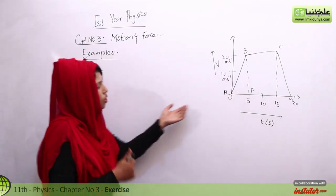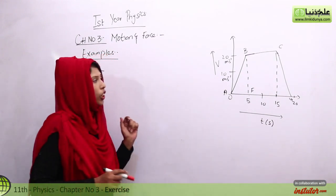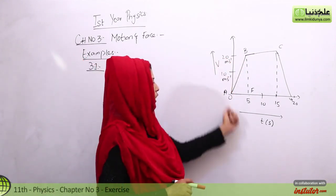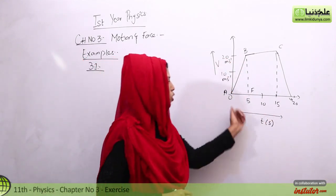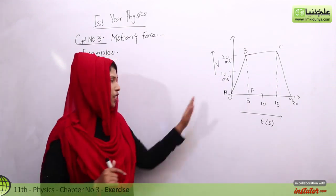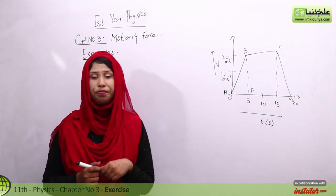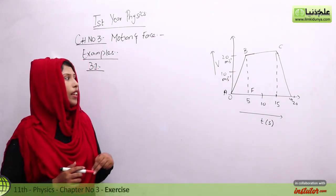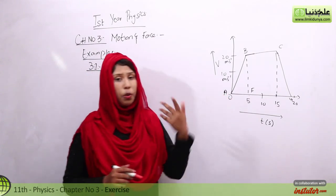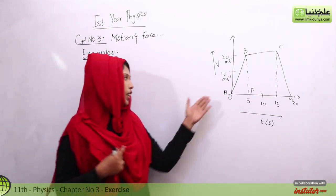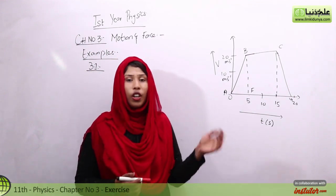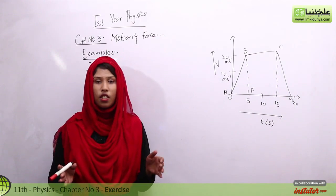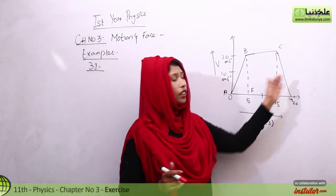We have a graph which shows a car moving on a straight road. All the details are shown in the graph. We have two things to explain: first, to describe the motion in relation to acceleration, and second, to find the total distance covered.